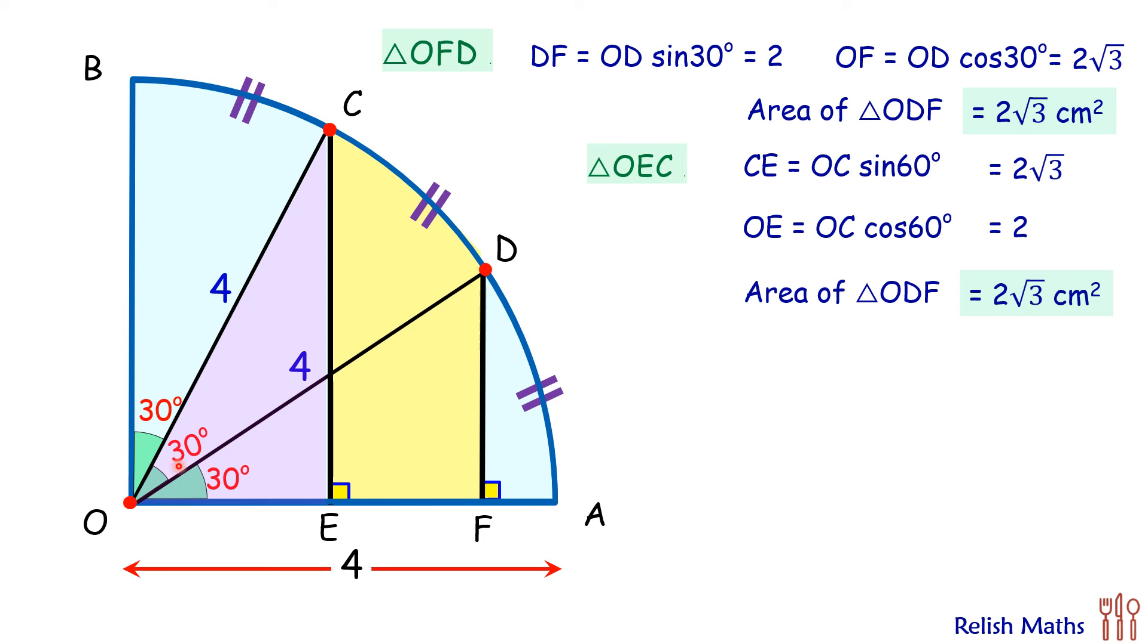Let's find the third area, that is the area of the sector OBC. For that we will apply the formula theta upon 360 into pi r square where theta is 30 degrees.